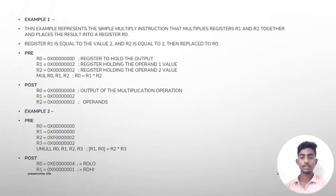Let us see some examples of multiply instructions. This example represents the simple multiply instruction that multiplies register R1 and R2 together and places the result into register R0. Register R1 equals the value 2 and R2 equals 2. Pre: R0 (register to hold output), R1 (register holding operand 1 value), R2 (register holding operand 2 value). MUL R0, R1, R2, so R0 = R1 × R2. Post: R0 (output of multiplication), R1=0x02, R2=0x02 (operands).